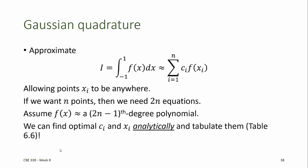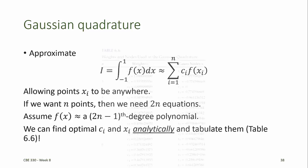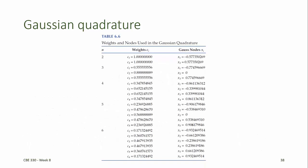But we don't have to go through the exercise of finding the weights and the locations each time we have a new function to evaluate. Rather, we can find them analytically and tabulate them. And they're tabulated for us in table 6.6 for up to n equals 6, that is, 6 data points in the domain.